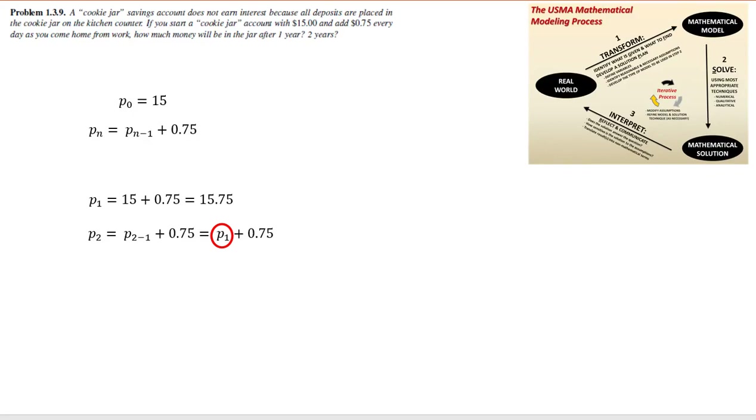We know p sub 1, so we're able to substitute in our value that we found from the previous iteration to discover that p sub 2 equals 16.5, which is just p1 plus 0.75.